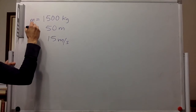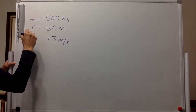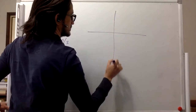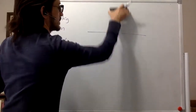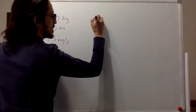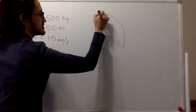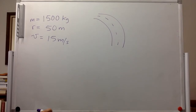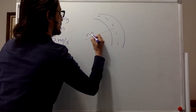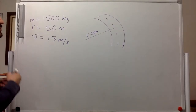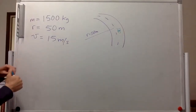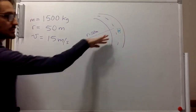So this is the mass, this is the radius of the curve, and this is the velocity. We can draw the pictorial representation first. So there's this curve, and the radius of curvature is 50 meters. We have a car over here, going at 15 meters per second, and this curve is unbanked.